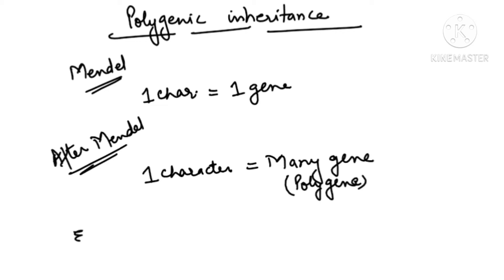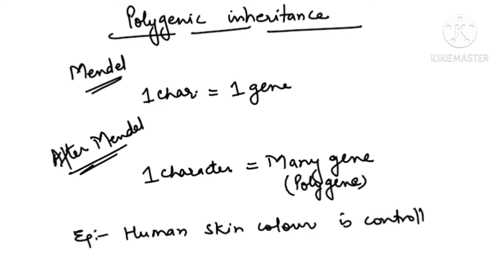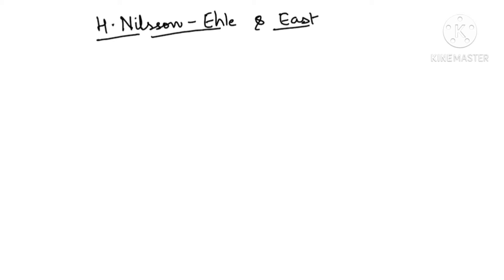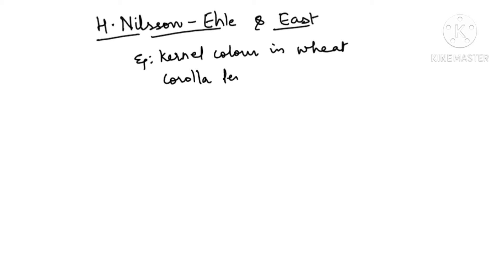For example, we can take human skin color. Human skin color is one character, but it is controlled by three genes. Nilsson and Issh were working on two examples: kernel color in wheat, and the length of corolla in tobacco. They found that these characters are controlled by polygenes.